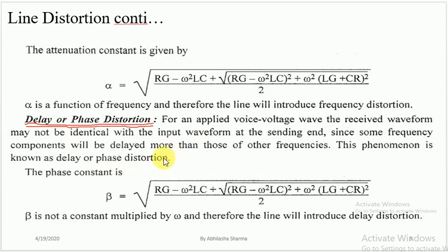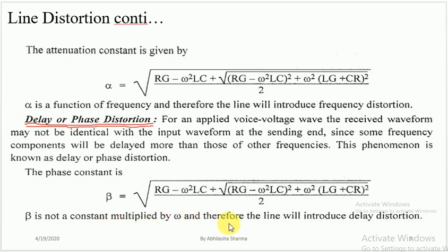This phenomenon is known as delay or phase distortion. So there are two types of line distortion: frequency distortion, caused due to attenuation, and phase or delay distortion, caused due to the phase constant beta. The equation for delay distortion is related to the phase constant beta. Since beta is not a constant multiplied by omega, the line will introduce delay distortion.